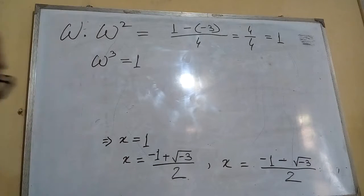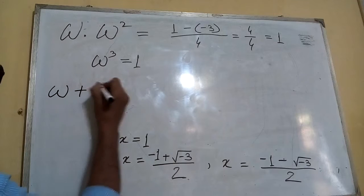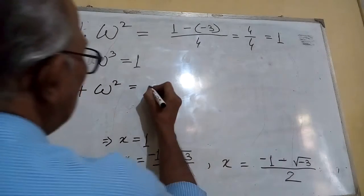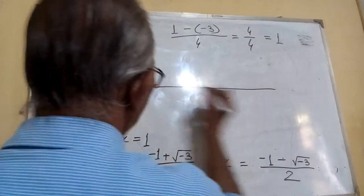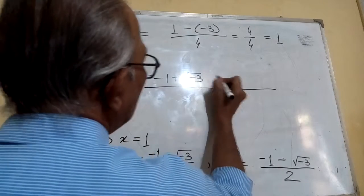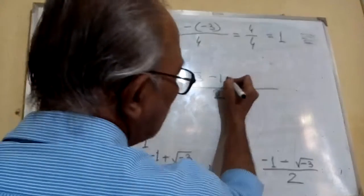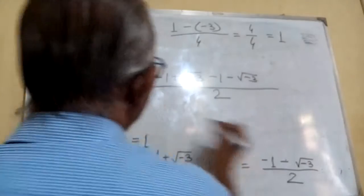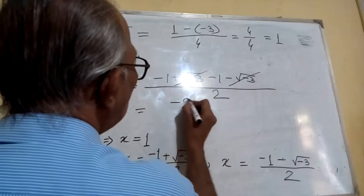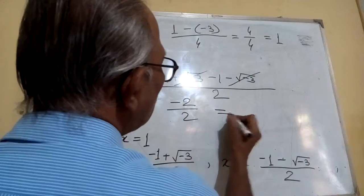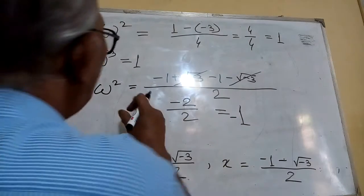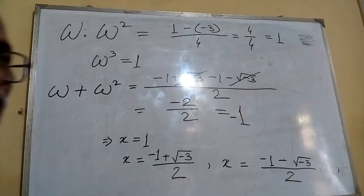Again, if we compute omega plus omega square — adding those two values, taking the LCM as two — we get minus one plus root of minus three, plus minus one minus root of minus three, all by two. That gives minus two by two, which equals minus one. So omega plus omega square equals to minus one.